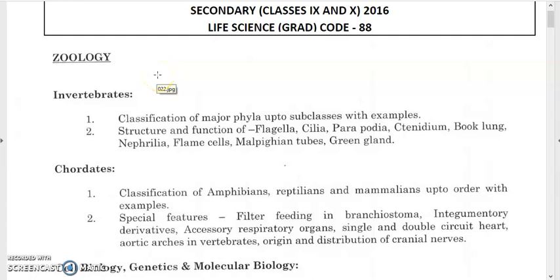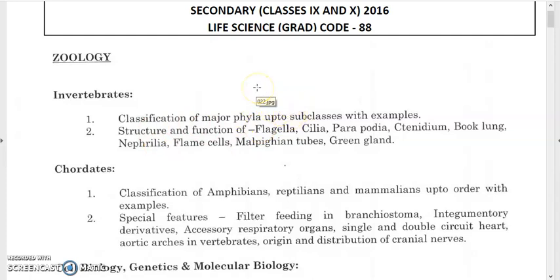This video contains the syllabus for the recruitment of assistant teacher for the post of class 9 and 10. The syllabus covers biological sciences. Starting with zoology, we have invertebrates: classification of major phyla up to class and subclass with examples, and the structure and function of flagella, cilia, parapodia, tинidium, book lung, nephridia, flame cells, Malpighian tubes, and green glands.